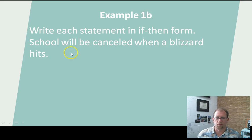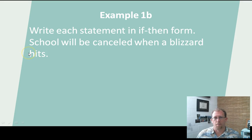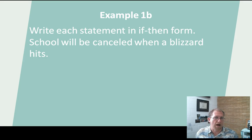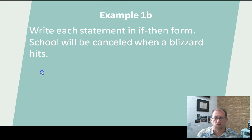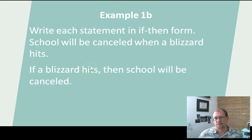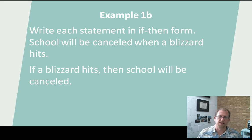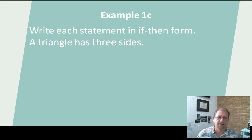School will be canceled when a blizzard hits. School will be canceled is the result, and a blizzard hitting is the hypothesis — this triggers that. You can have if-then statements that are given to you backwards and you have to determine what triggered what. So: if a blizzard hits, that's the hypothesis, then school will be canceled. As you're doing your classwork, don't just think that the first part of the sentence is the if — that's not necessarily true. It can get rearranged.